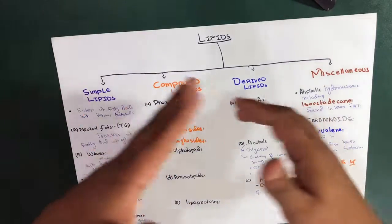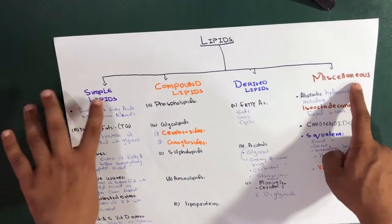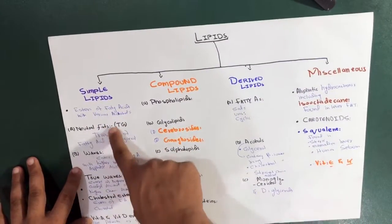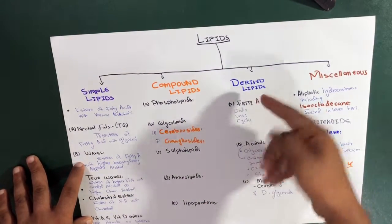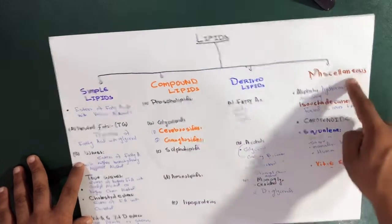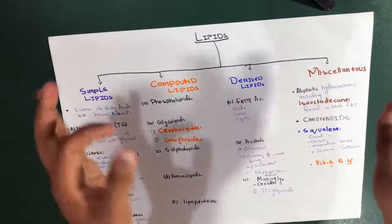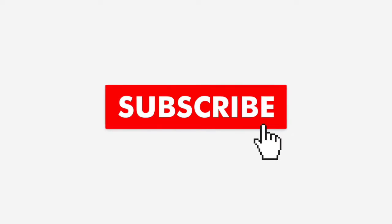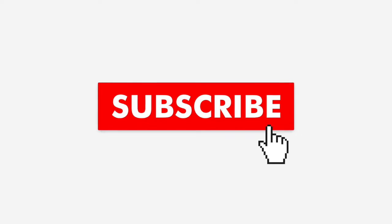To summarize the classification of lipids: simple lipids include neutral fats and waxes; compound lipids include phospholipids, glycolipids, sulfolipids, aminolipids, and lipoproteins; derived lipids include fatty acids, alcohols, and monoglycerides; and miscellaneous covers aliphatic hydrocarbons. Please comment and let us know if you want to learn more about any topic. Thanks for watching Taiji Schooling.